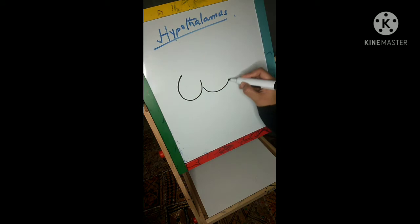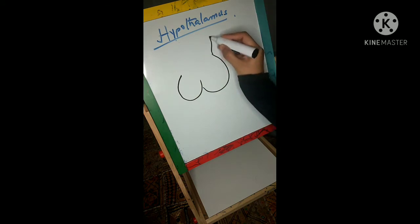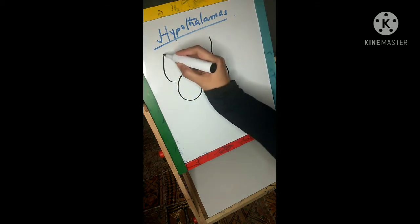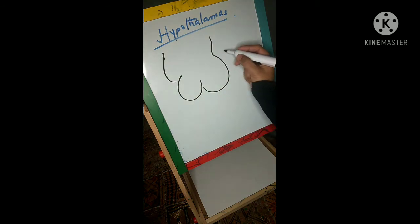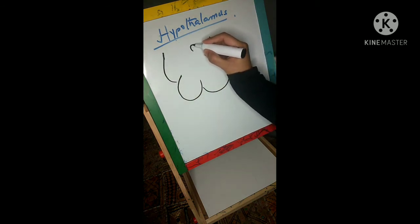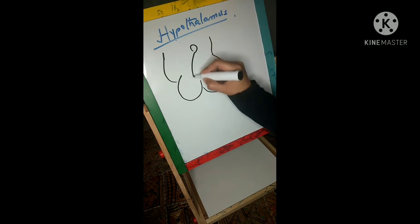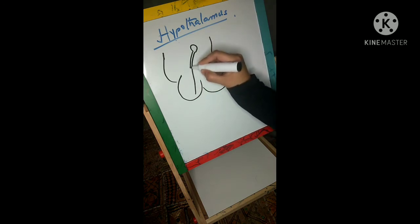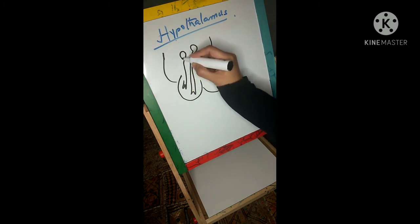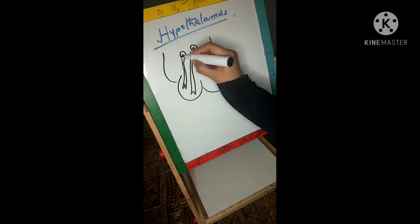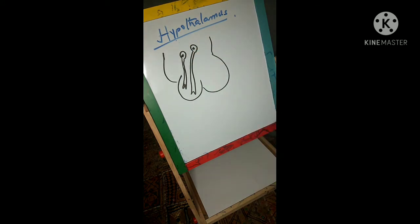I am drawing the pituitary gland, which has two parts: posterior pituitary and anterior pituitary. First I will discuss the posterior pituitary. Above this pituitary I have drawn the hypothalamus. I have drawn two neurons — the cell bodies are in the hypothalamus while the axons extend to the posterior pituitary.